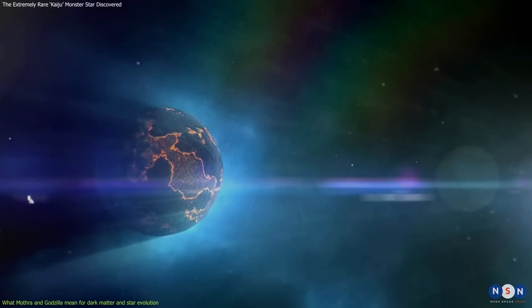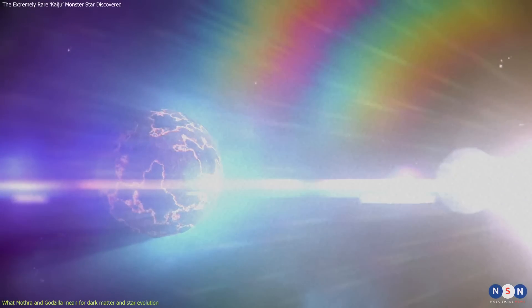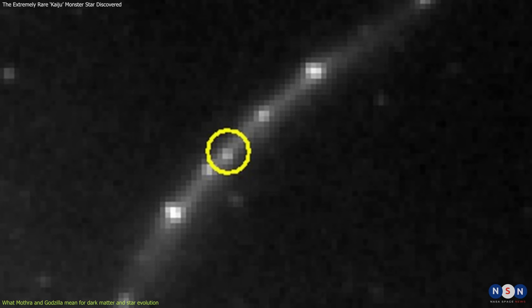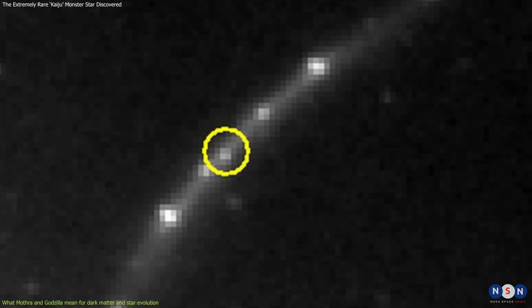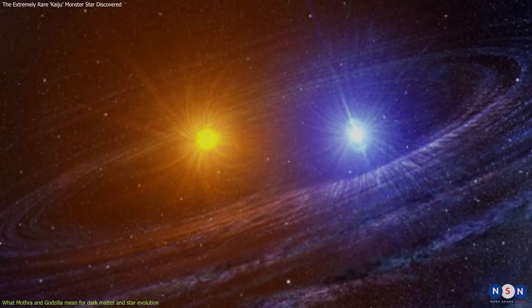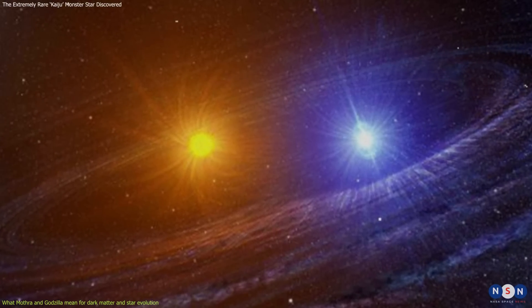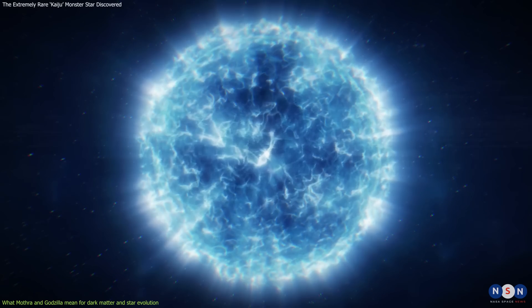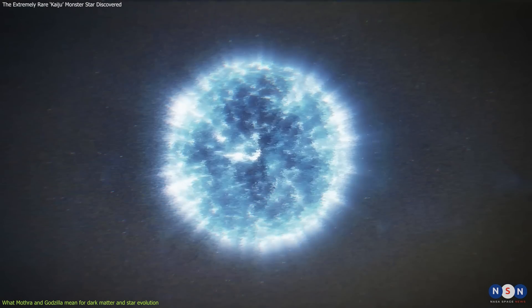However, the discovery of these stars also comes with some limitations and challenges that need to be overcome. One limitation is that these stars are only two examples of rare stars that could be related to dark matter, so they may not be representative or generalizable to other cases.